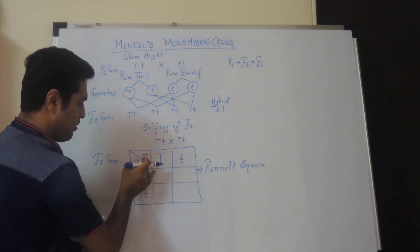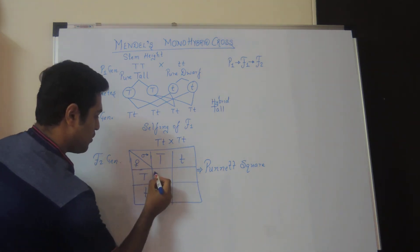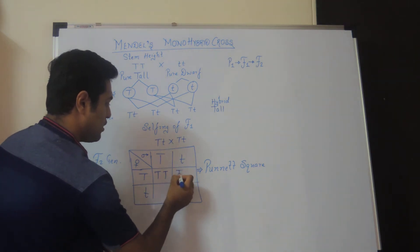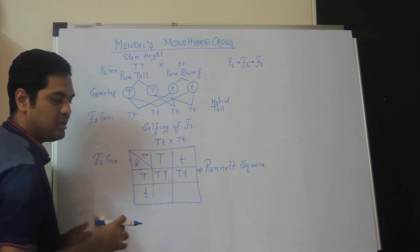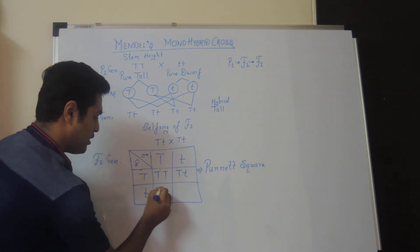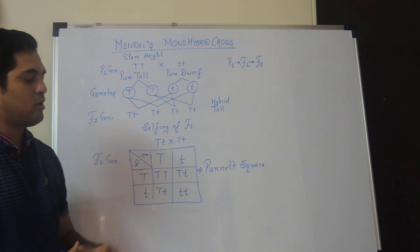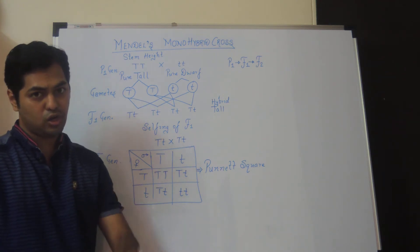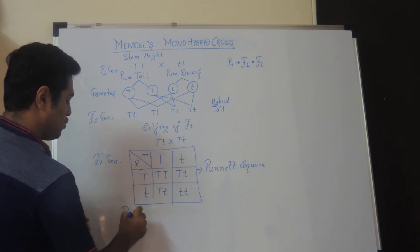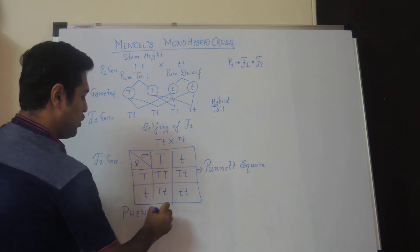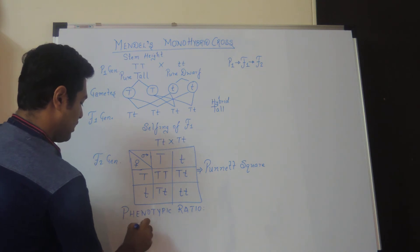In the Punnett square, male gametes are shown horizontally and female gametes vertically. The fusion gives: capital T with capital T produces TT, capital T with small t produces Tt, small t with capital T produces Tt, and small t with small t produces tt. This is the complete F2 generation from the monohybrid cross.